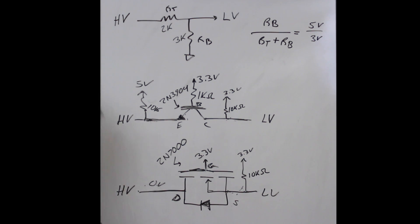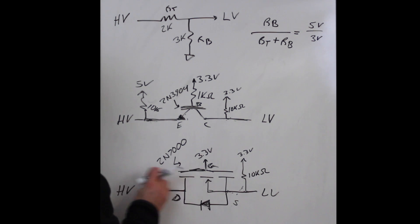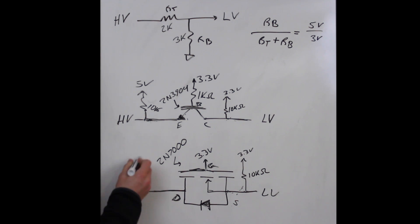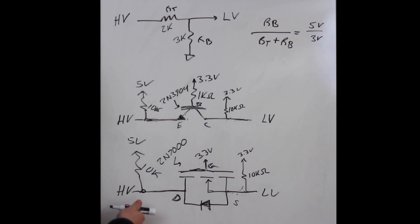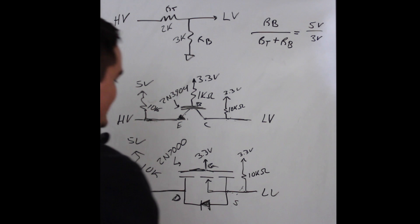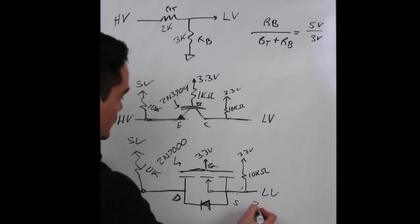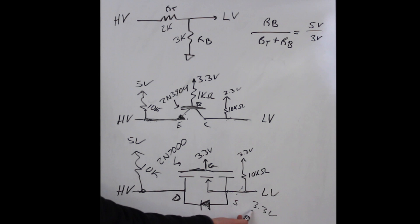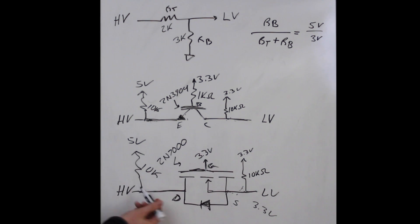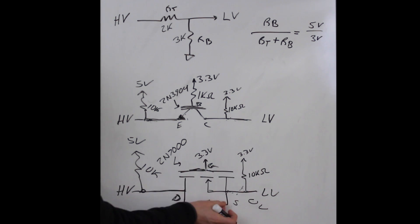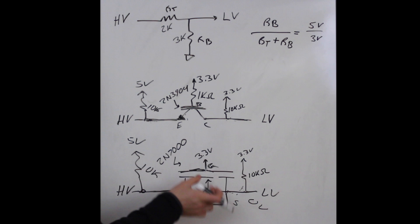This one is also bi-directional. Let's go the other way - pull that up high with 10k, shifting from 3.3 to 5 volts. If we make this 3.3 volts, our VGS is 0, it's not on, this signal gets pulled up to 5 volts.